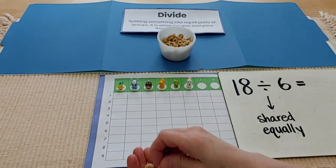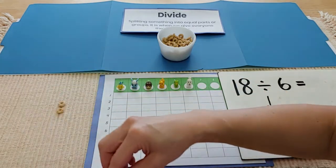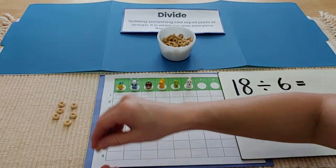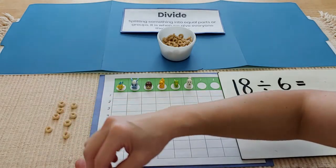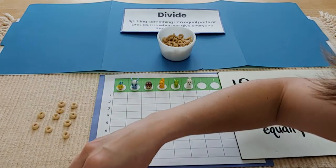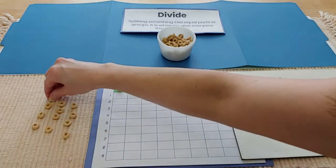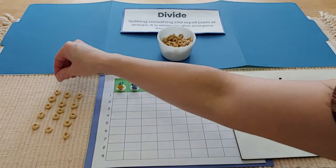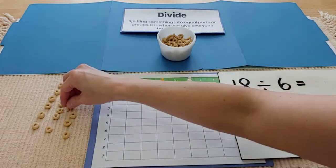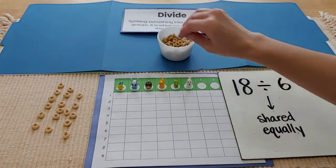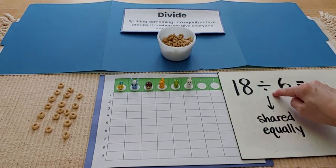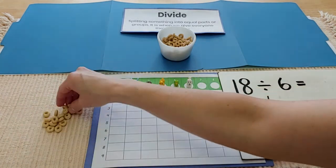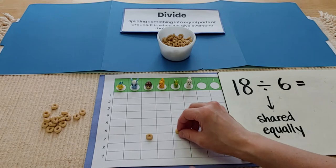The first step is I need to count out 18 counters because that's how much it's telling me to share. And I'm going to take my time counting because I want to make sure I have the right amount. 1, 2, 3, 4, 5, 6, 7, 8, 9, 10, 11, 12, 13, 14, 15, 16, 17, 18. Okay. I have 18 Cheerios and I am ready to share them equally with my six friends. I'm going to leave those in my little pile and we'll see if this is going to work. I hope they can each get the same amount.